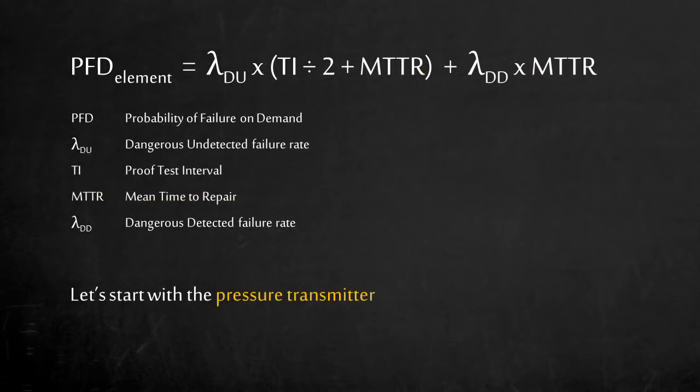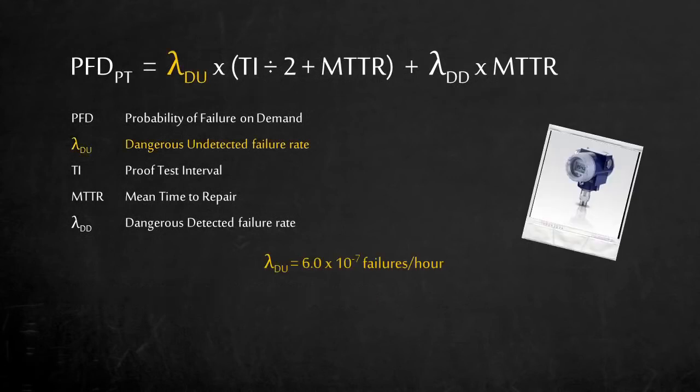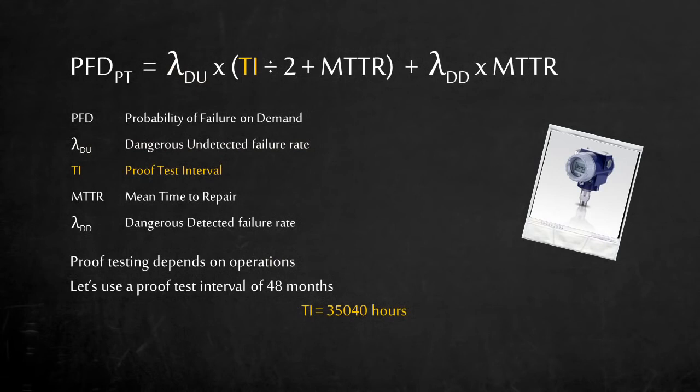Let's try it out on the pressure transmitter, which is our sensor element. The pressure transmitter has a dangerous failure rate of 60 hidden failures per 1 million hours of operation. Proof testing depends on operations. This is crucial and requires commitment from operation and maintenance. Let's say the crew performs a proof test every 48 months. This is to ensure the transmitter can produce the alarm signal in a high-pressure condition.